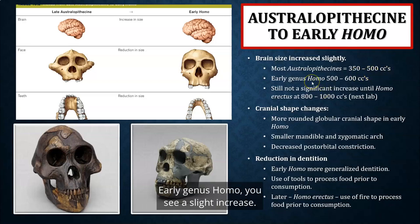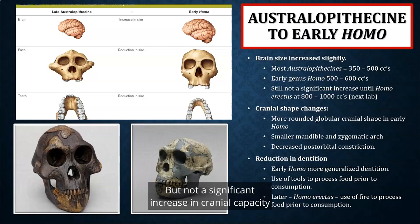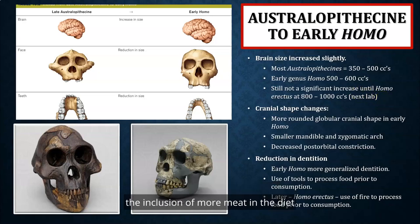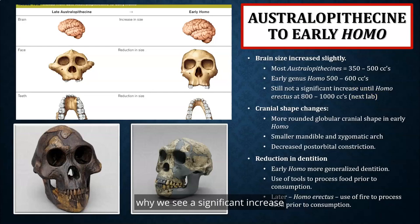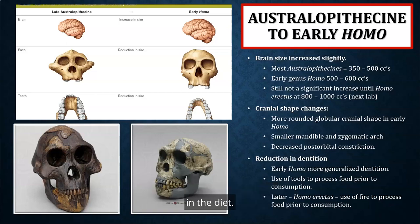Early genus Homo shows a slight increase, somewhere between 500 to 600 cc, but not a significant increase in cranial capacity until we get to Homo erectus. With Homo erectus, the inclusion of more meat in the diet is proposed to be one of the main reasons for that significant increase, since the brain is a very metabolically expensive organ that likely required higher quality protein in the diet.